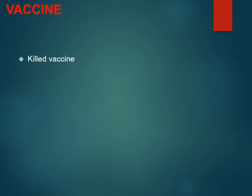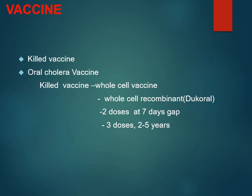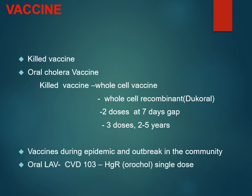Regarding vaccines: the injectable killed vaccine has many adverse effects and is no longer in use. The oral vaccines include killed vaccines — whole cell vaccine and whole cell recombinant vaccine (brand name Dukoral) — given in two doses at a seven-day gap; children aged two to five receive three doses. Since these do not provide lifelong immunity, vaccines are recommended only during epidemics or outbreaks. The oral live attenuated vaccine, CVD 103-HgR strain (Orochol), requires only a single dose.